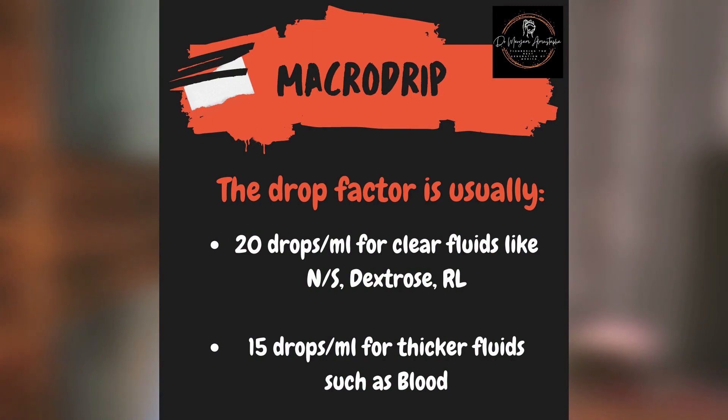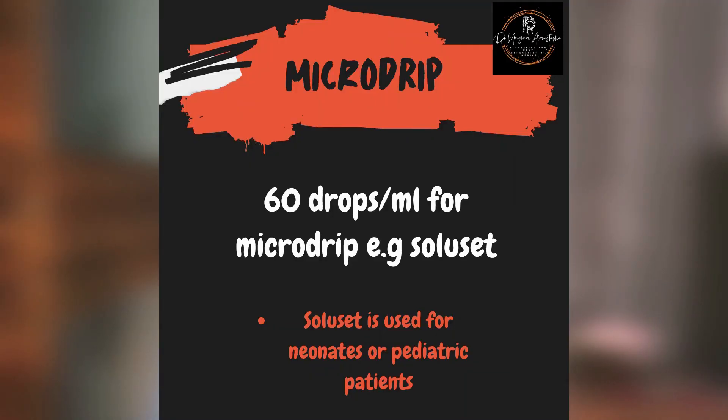For the macro drip, it's usually 20 drops per ml for clear fluids like normal saline, Ringer's lactate, and dextrose, and it's usually 15 drops per ml for thicker fluids like blood. The number is less for blood because blood is thicker, hence you need a smaller amount to make up one ml. For the micro drip, like the Solucid, the drop factor is usually 60 drops per ml.